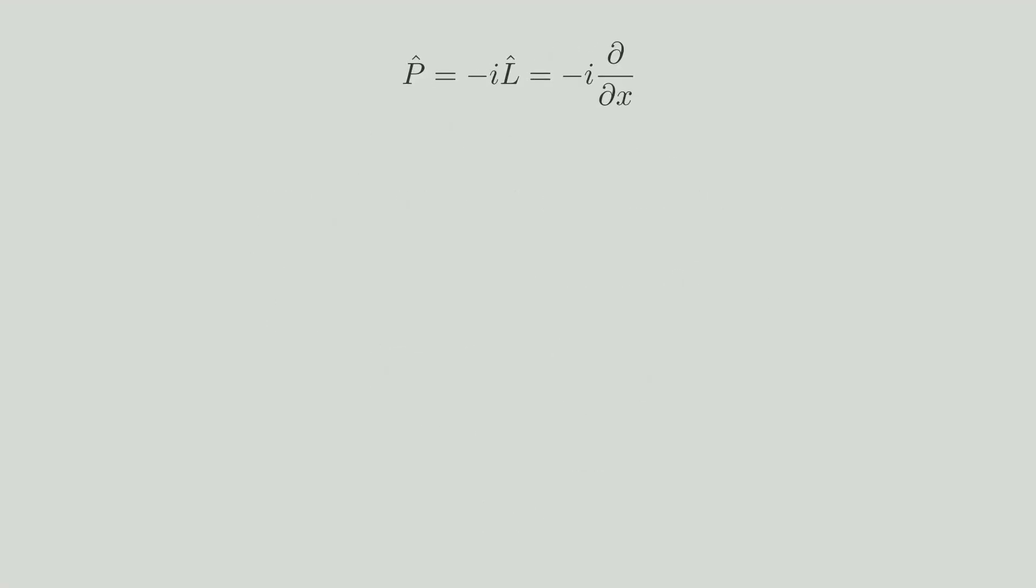What if we multiply the previous operator with a minus and an imaginary number? Let's repeat what we've done before. First, the integral and then the differentiation. Of course, the right side has to be zero.